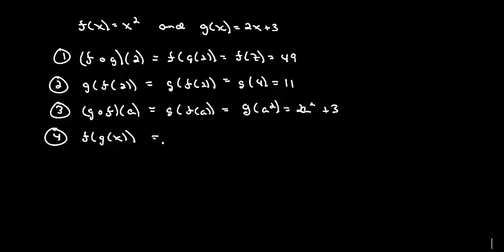And then here, f of g of x. We take g of x, which is 2x plus 3, and we plug it into f, which means we've got to take 2x plus 3 and square it. So that gives us 4x squared plus 12x plus 9.